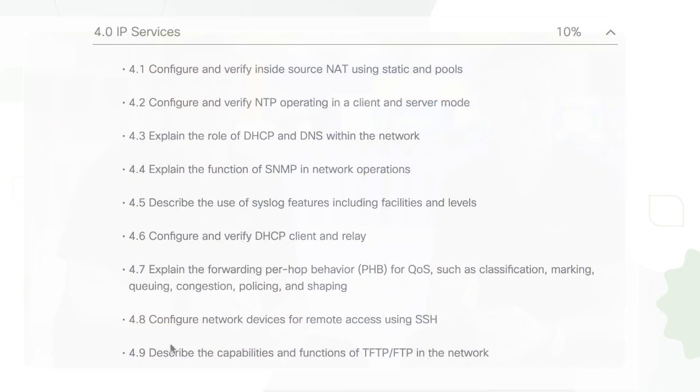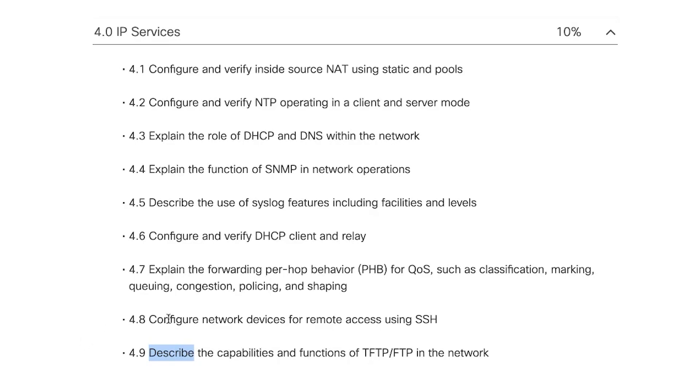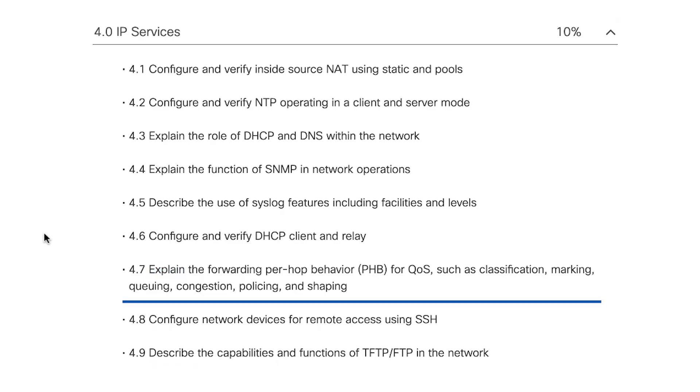Another aspect we've talked about is the importance of the verbs that show up on the blueprint. Here we can really see the difference. Several of these tasks are about configuring and verifying DHCP, DNS, or NAT. But task 4.7 just says 'explain how QoS works.' QoS, quality of service, is really critical to networks but it's a complicated, more advanced topic. At the CCNA level, we're not going to ask you to configure it — you simply need to know how to explain its importance, what role it serves, and how topics like classification or queuing factor into what the network does.